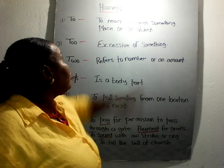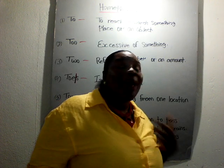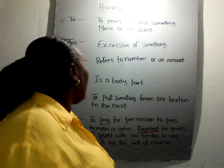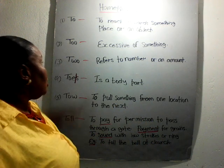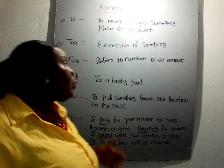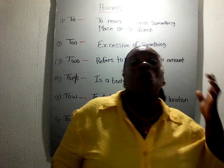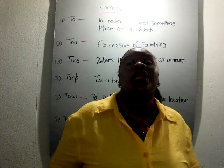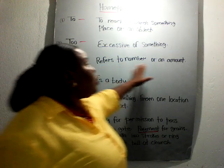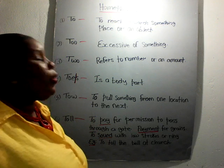That is what homophones are — they are spelled differently but they sound almost alike. 'Two' refers to counting, to a number or an amount: two apples are on the table, two bottles are on the chair, two trees are in the backyard.